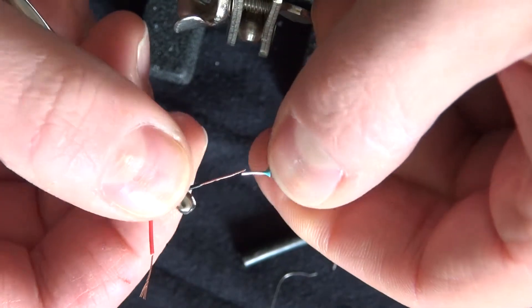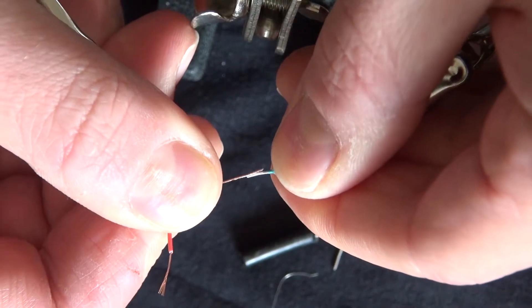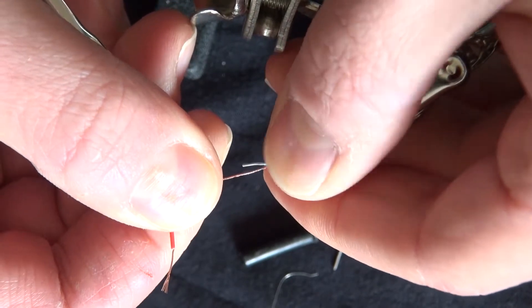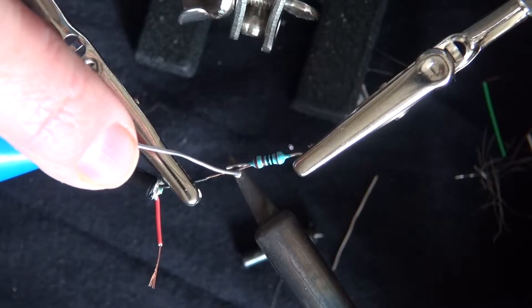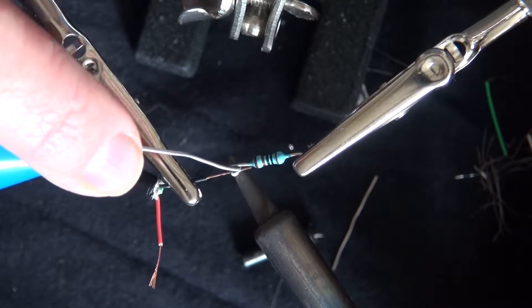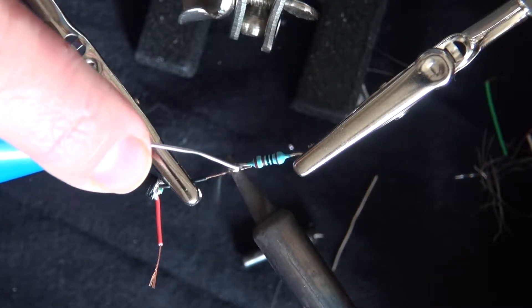Take your 1k ohm resistor, cut off the lead to make it shorter, and solder it together. You can solder it to positive or negative, it doesn't really matter.